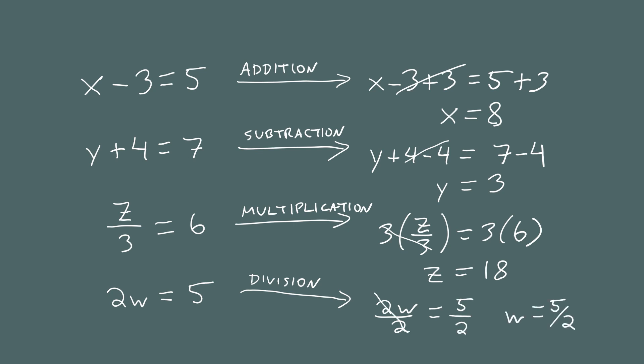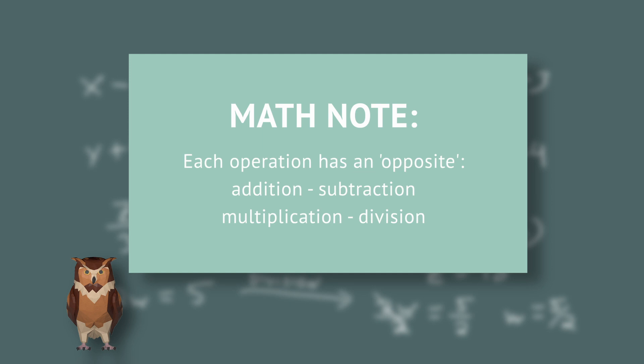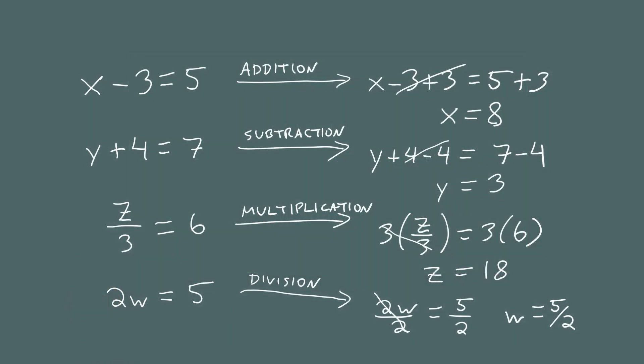So for each of the four operations — addition, subtraction, multiplication, and division — every operation has an opposite. The opposite of subtraction is addition, the opposite of addition is subtraction, the opposite of division is multiplication, and the opposite of multiplication is division.